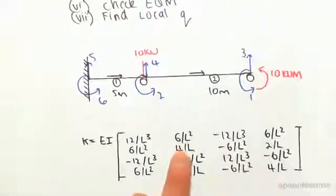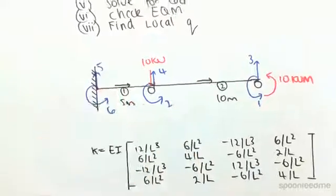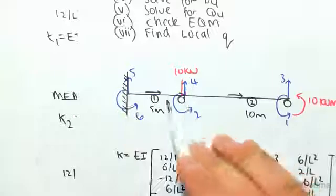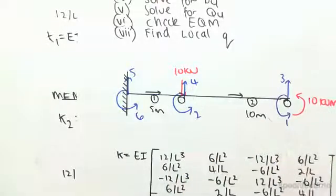So guys, once again, you can see the process is very simple. You just find all these values, sub them in for your member, and then come and label it after. Just the notation again, vertical moment, vertical moment, vertical moment. That's for a beam element.